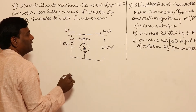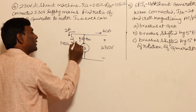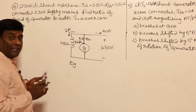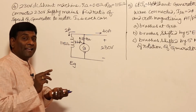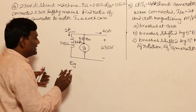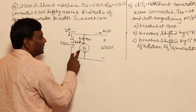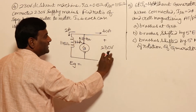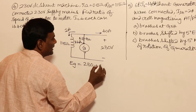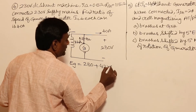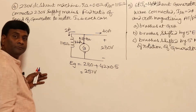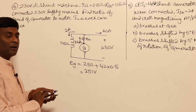So armature current IA equals 40 plus 2 equals 42 amperes. Now let us find EG. EG is directly proportional to phi times omega because E equals PZ by 2πA, which is the machine constant, times phi times omega. For the generator, EG equals VT plus IA times RA equals 230 plus 42 times 0.5, which gives 251 volts.